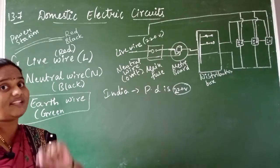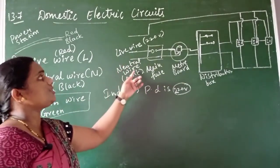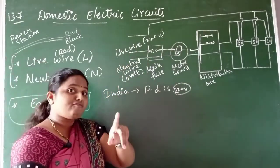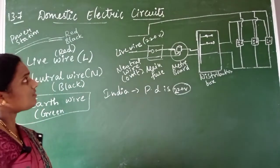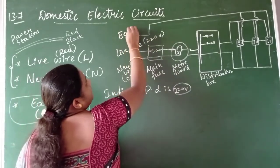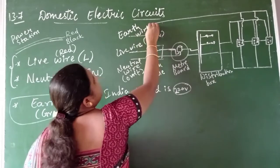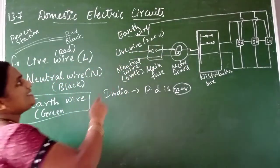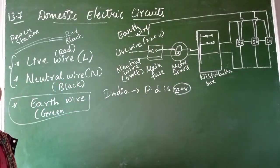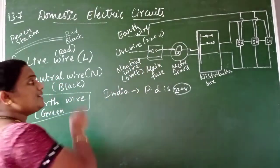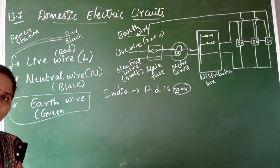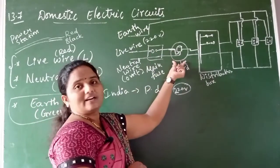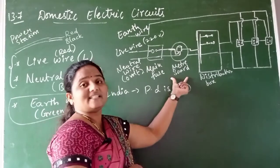The live wire has high potential, so if we touch it there is a chance of getting an electric shock. Touching the neutral wire does not cause that much harm. There is also an earth wire. Whatever current comes from the cables passes through the live wire — which has nearly 220 volts — and the neutral wire. These two wires then connect to the main fuse, and from the main fuse, the live wire and neutral wire connect to the meter board.